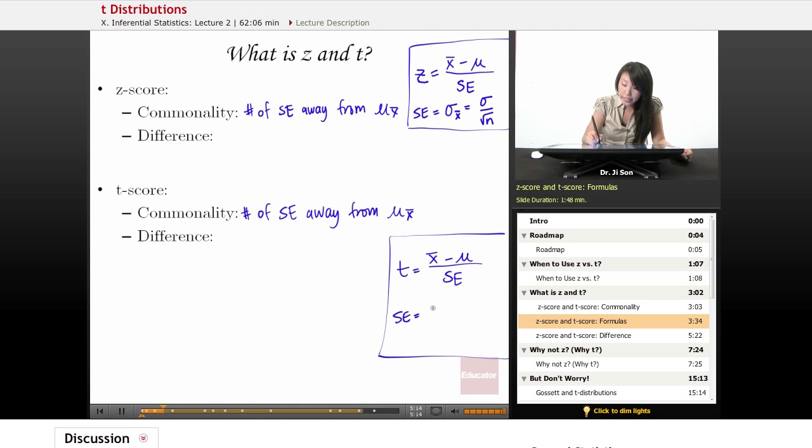Well, you could also write this one as s, little s, sub X-bar. And that would be little s divided by the square root of n. And herein lies the difference, right there. That's our difference.